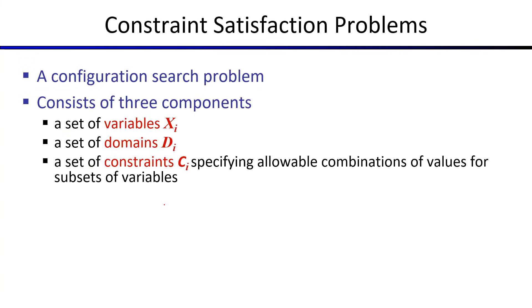The topic we are going to cover today, constraint satisfaction problems, is a type of configuration search. It has three components: a set of variables, like x1, x2, up to xn.